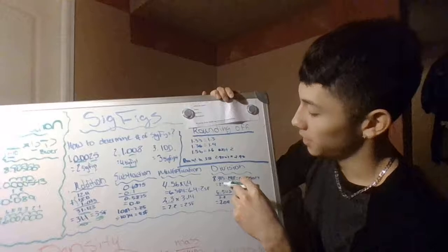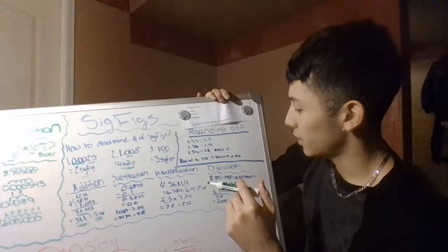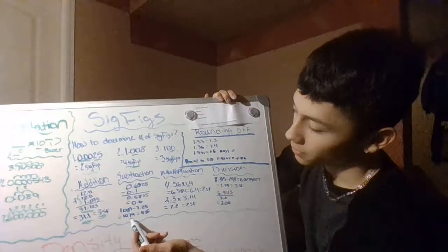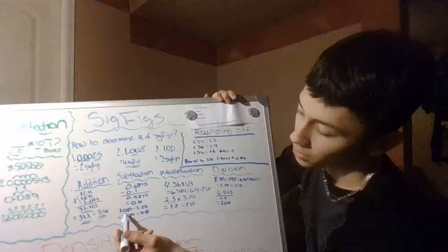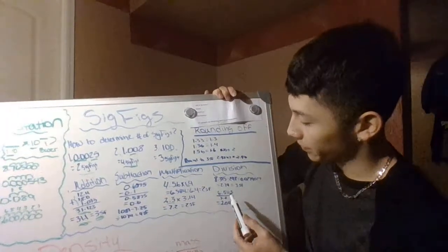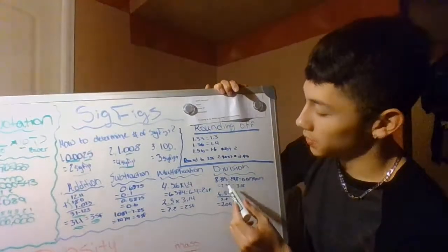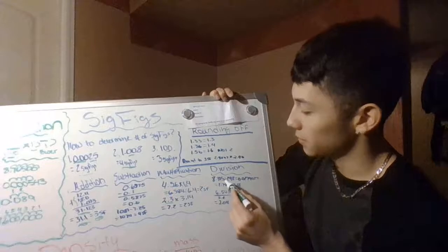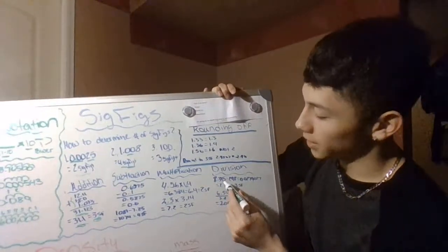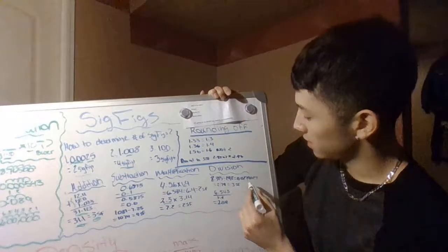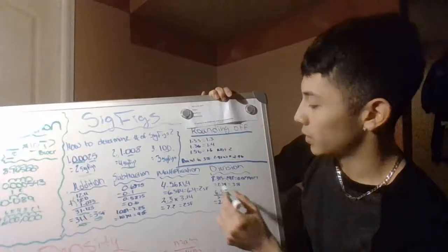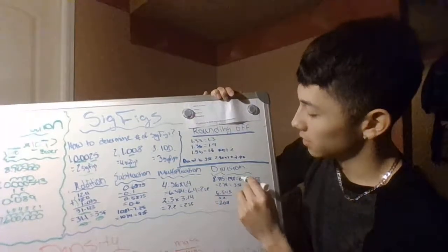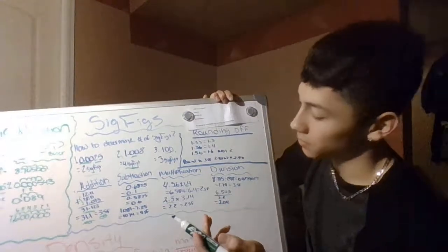For division: 8.315 divided by 298. We want three sig figs because 298 doesn't have a decimal — similar to the 1081 rule. When you divide those two numbers you get 0.027927, and when you round that answer you get 0.0279, which gives you three sig figs, going back to 298 having three sig figs.